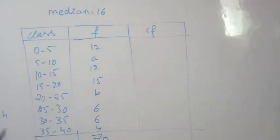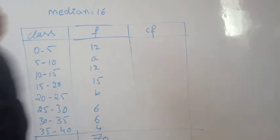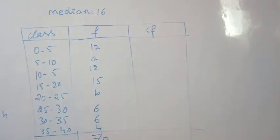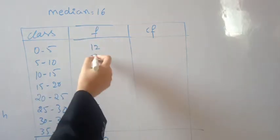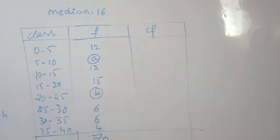The class intervals are 0-5, 5-10, 10-15 with a difference of 5. The frequencies include A and B which we need to find out.